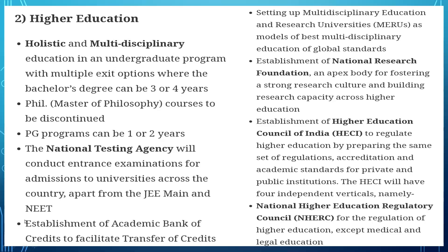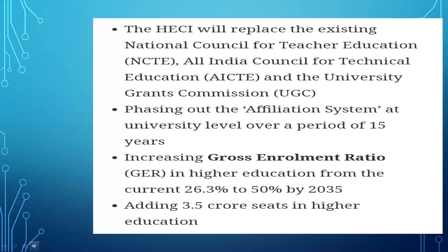The second part covers higher education. The bachelor's degree course is of three or four years. The existing National Council for Teacher Education (NCTE), the All India Council for Technical Education (AICTE), and the University Grants Commission (UGC) will be replaced by a new single governing body. The application system at the university level will be phased in over a period of 15 years.